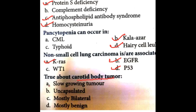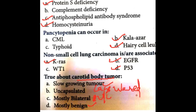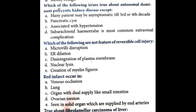True about carotid body tumor: it is a slow-growing tumor — true. It is mostly benign — yes. It is mainly unilateral, not bilateral. Carotid body tumor is capsulated. So carotid body tumor is slow-growing, capsulated, unilateral, and benign.